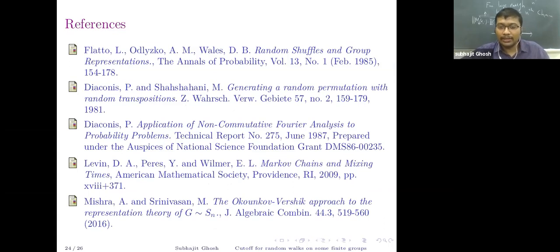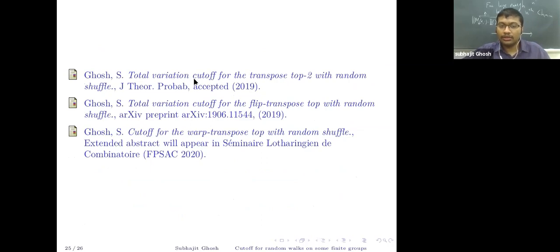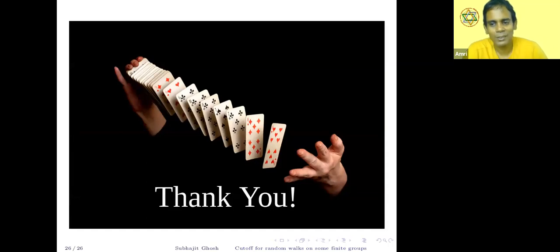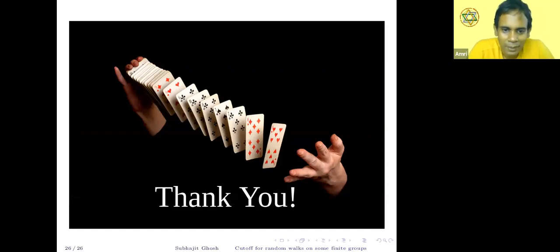Here are the references: Flatto-Odlyzko-Wales for the top-with-random shuffle on the symmetric group; Diaconis-Shahshahani for the random transposition model; the Diaconis book on non-commutative Fourier analysis where the mixing time for top-with-random shuffle is found; the Levin-Peres-Wilmer book on Markov chains and mixing times; and the Mishra-Srinivasan paper on the Vershik-Okounkov approach to G_n ≀ S_n representation theory. The three papers for our models cover the alternating group, the demihyperoctahedral group D_n, and the present wreath-product model respectively.